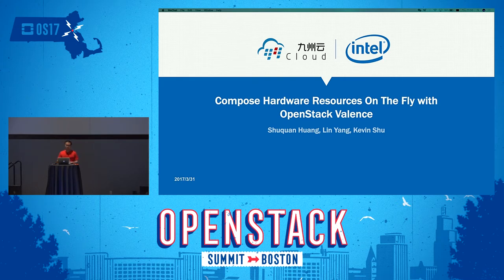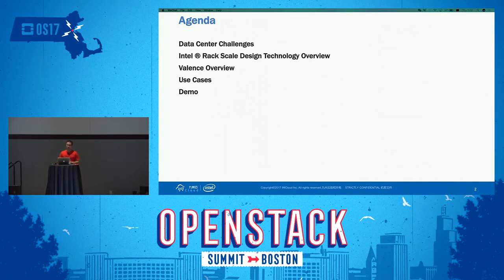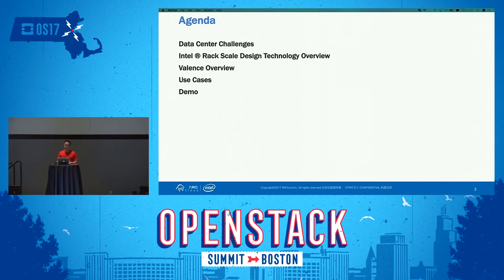Today, my topic will walk you through how to use the open-stack variants of this project to compose hardware resources on the fly. This is a joint project — Intel and 99Cloud work together with many other vendors — we are working on the Valence project. First, I will introduce the data center challenges today. Then I will introduce the Intel RackScale Design technology. Third, I will talk about the Valence project, which was announced at the last summit in Barcelona. Fourth, I will talk about the typical use cases of when using Valence can help us address problems. And last, I will show you some demos.